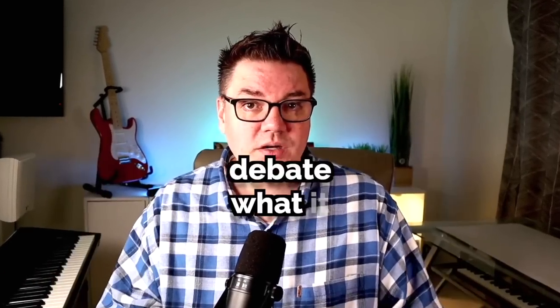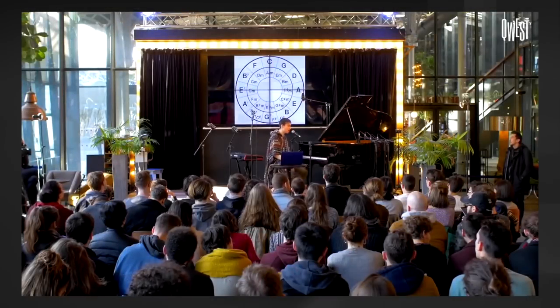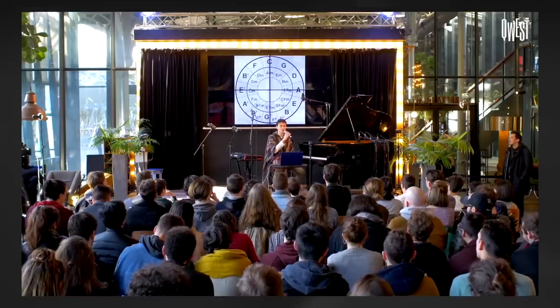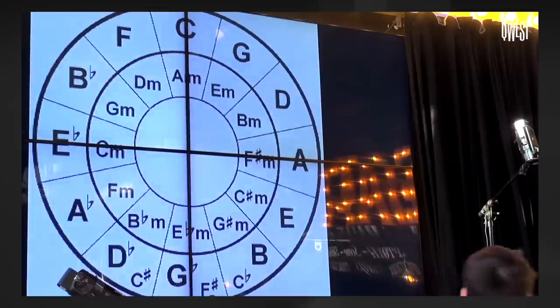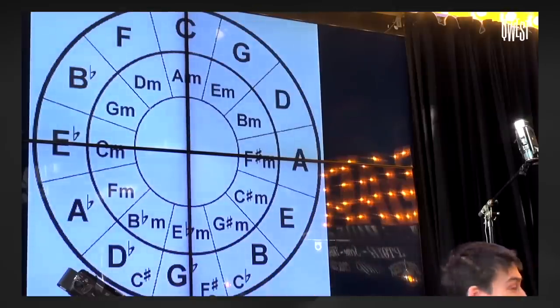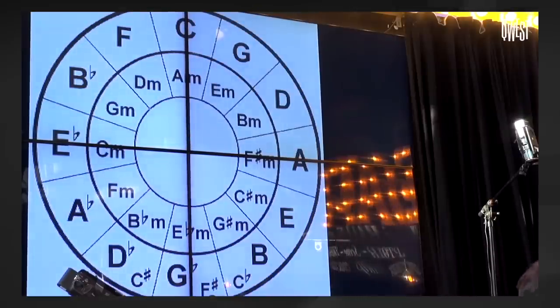I didn't think we had any room to debate what it meant to be major versus minor. Every music school in the world has been teaching it the same way for hundreds of years. But when Jacob Collier was in France giving a master class, he took it a step further. He has a theory which is that all major chords are fifths and all minor chords are fourths.